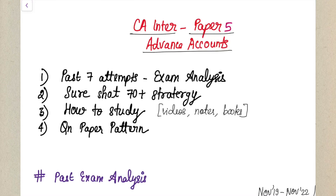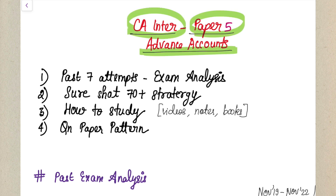Hello guys, welcome to Bhamna's Online Academy. Today we are going to discuss CA Inter Paper Number 5 - Advanced Accounts exam analysis. In this video, I'm going to analyze the past seven attempts and give you the most important chapters based on this exam analysis, along with a sure-shot strategy of how you can score 70 percent or 70 plus marks in your exams without much effort.